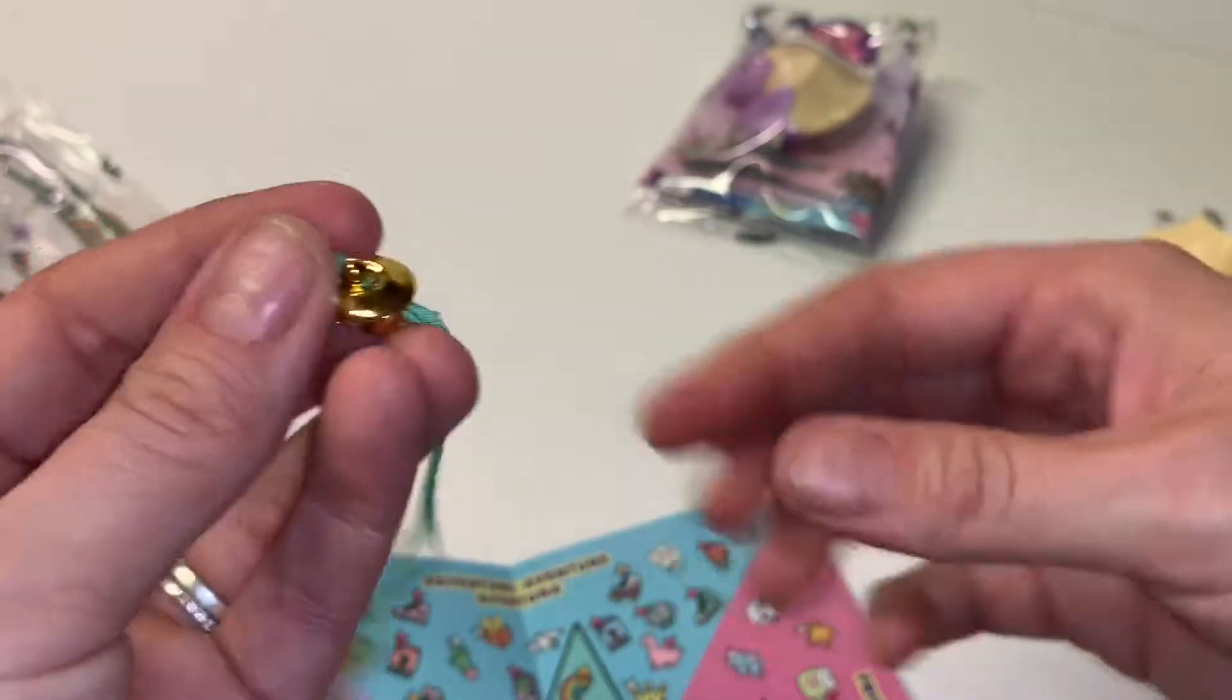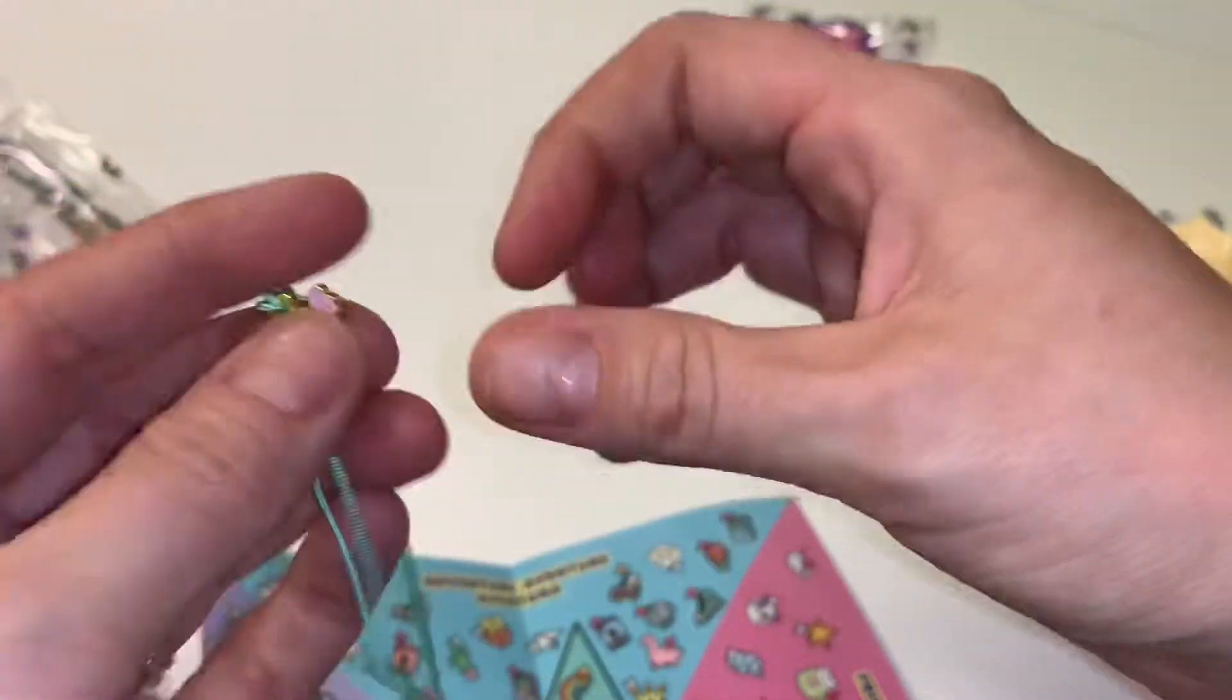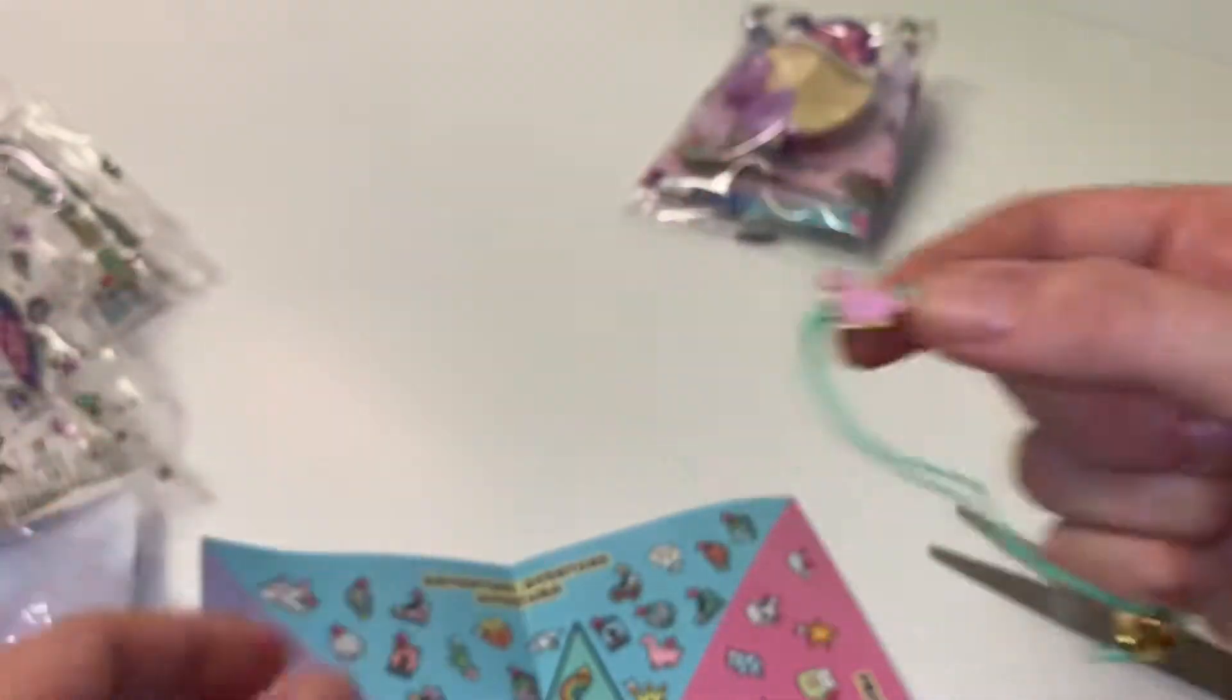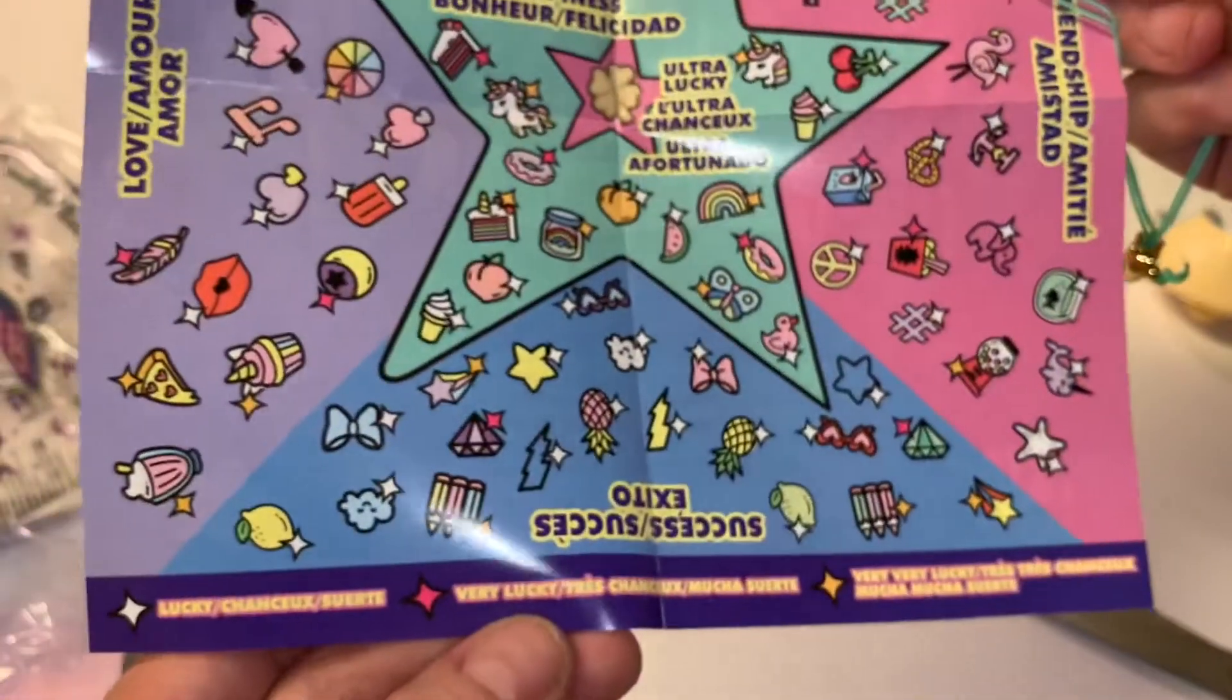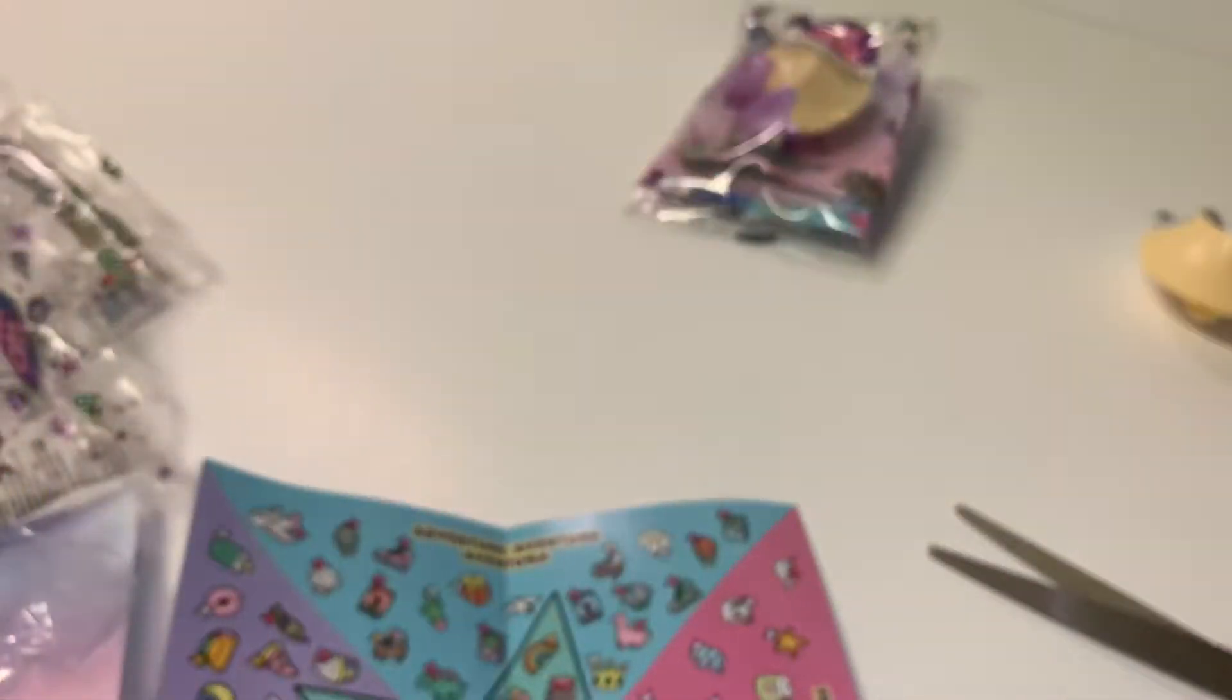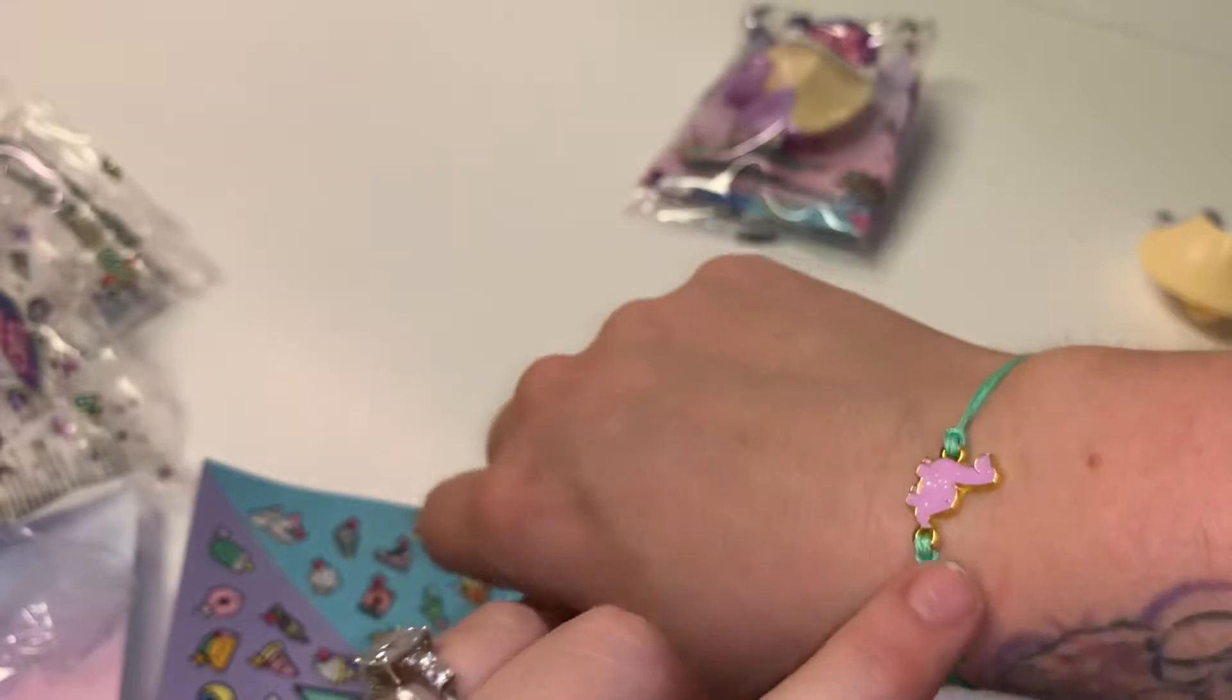And it is glittery. So let's see. It's already right here. And it's got the pink, so it is very lucky. Little pink dinosaur. I do like the green bracelet though. That is cute. I don't think my other one had a green bracelet. So there's the little pink dinosaur.